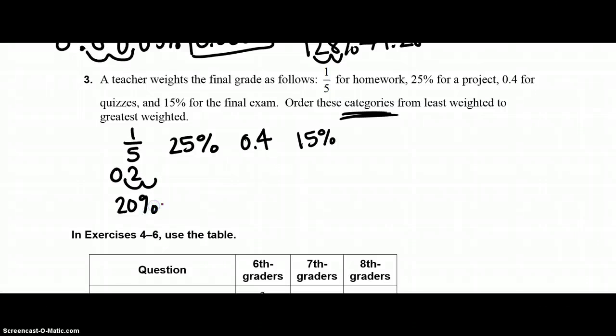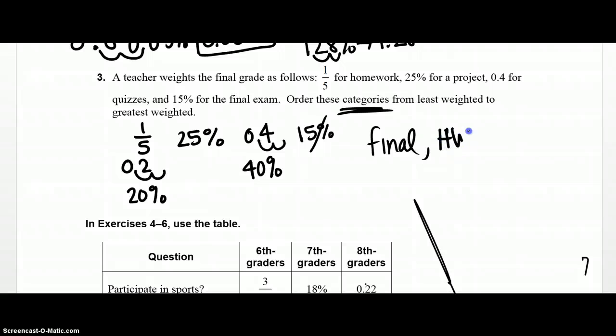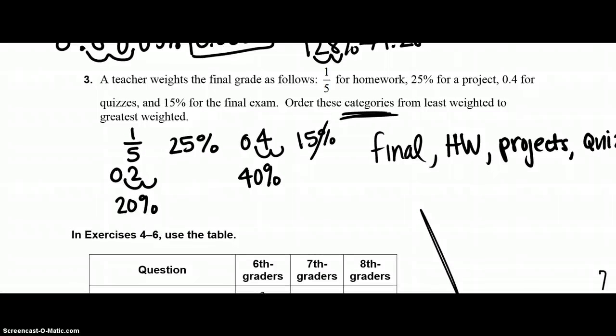25%, 0.4, swoop twice, and this is 40%. So if I'm ordering the tasks from least to greatest, the least task is 15%, and that is the final exam, so I'm going to say final. The next is one-fifth, which was homework, and then homework, the third is 25%, which is projects, and the highest percentage is quizzes.